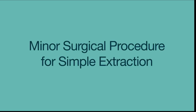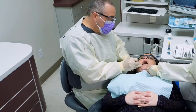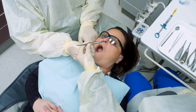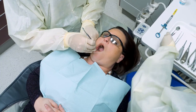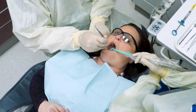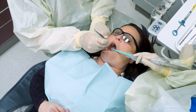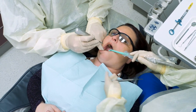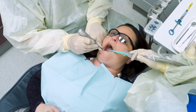The procedural steps to assist with a simple extraction include: ensure the patient is properly anesthetized and comfortable, hand the dentist the periosteal elevator, retract the cheek and/or tongue, and rinse and suction as needed. Retrieve the periosteal elevator and pass the small elevator.